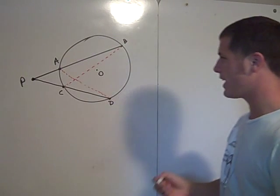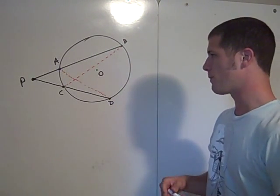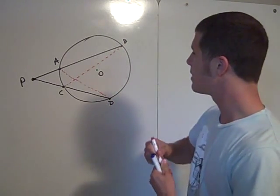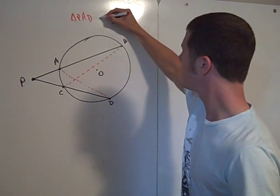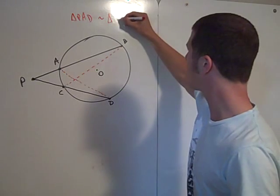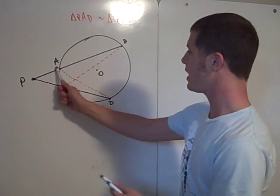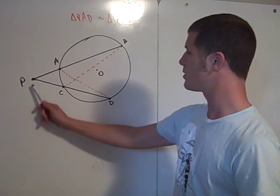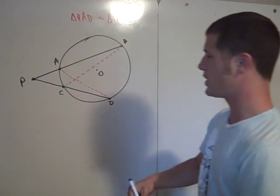And what that gives us, actually, are two similar triangles. In fact, triangle PAD is similar to triangle PCB. PAD is similar to PCB. So, I'll show that. Well, they both share angle P, right?